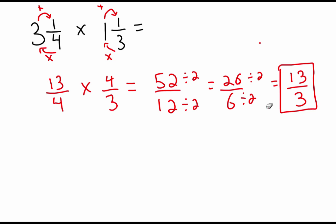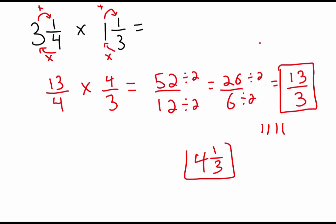We have 13 thirds, but we can't leave it as an improper fraction — we have to convert it back to a mixed fraction. How many times does three go into 13? Three, six, nine, twelve — that's four times, and we reach 12. There's one left over, so our answer is four and one third.